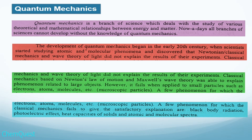A few phenomena for which classical mechanics fails to give a satisfactory explanation are: black body radiation, photoelectric effect, heat capacities of solids, and atomic and molecular spectra. These are the phenomena about which classical mechanics was unable to answer the typical questions.